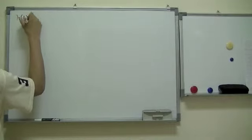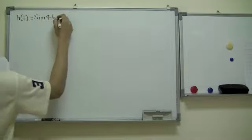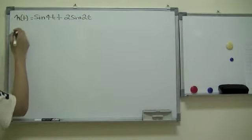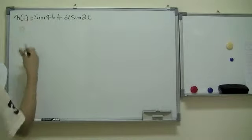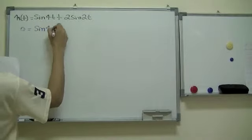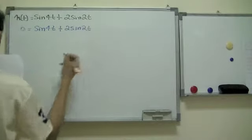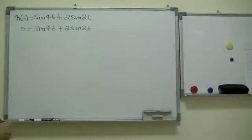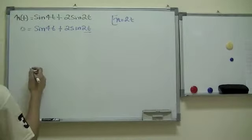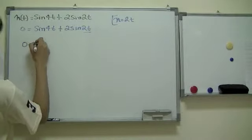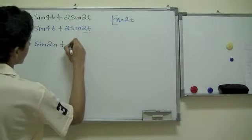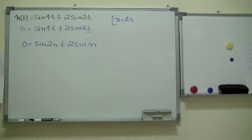H of t equals sine 4t plus 2 sine 2t. To find the zeros of this function, we need to make this equal to zero. Zero is equal to sine of 4t plus 2 sine 2t. Instead of writing 2t every single time, let's just put n. Let n be equal to 2t. So we basically would say zero is equal to sine of 2n, because it's 4t which is 2 times n, plus 2 sine of n.